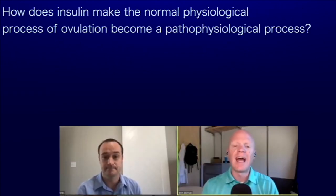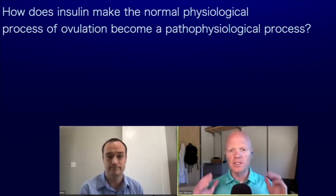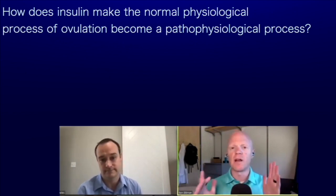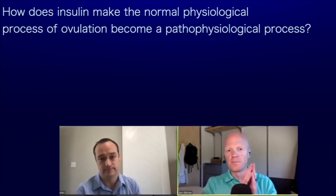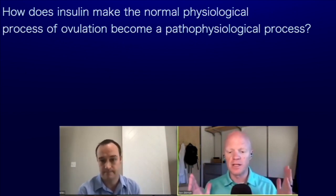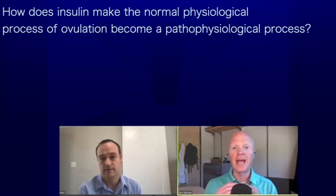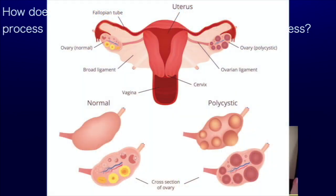So how does insulin mess it up? The process just described was the normal physiological process of ovulation. How do things get pathophysiological — how do things go wrong — when insulin suddenly wants to join the party?